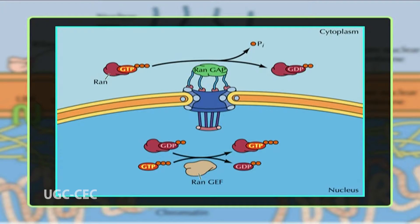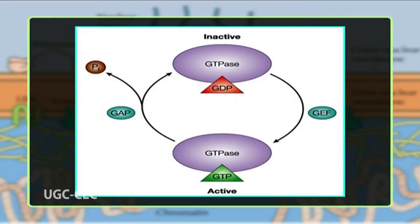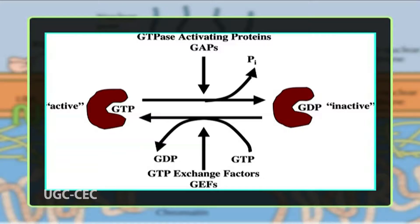Importin proteins bind their cargo in the cytoplasm and then interact with the nuclear pore complex to pass through its channel. Once inside the nucleus, interaction with RanGTP causes a conformational change in the importin that causes it to dissociate from its cargo. The resulting complex of importin and RanGTP translocates to the cytoplasm, where RanGTP-binding protein separates RanGTP from the importin. A GTPase then binds RanGTP and induces hydrolysis of GTP to GDP. The resulting RanGDP binds nuclear transport factor 2, which returns it to the nucleoplasm, where a guanine nucleotide exchange factor replaces GDP with GTP, regenerating RanGTP and beginning the cycle anew.